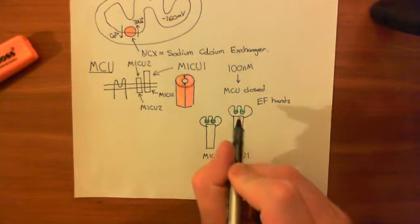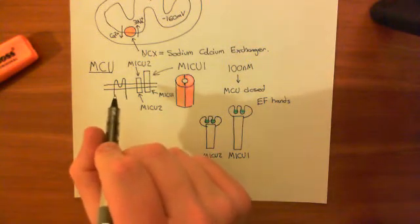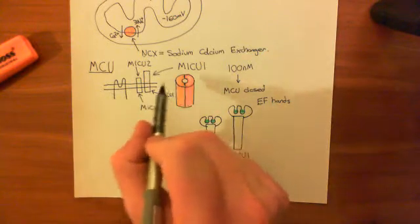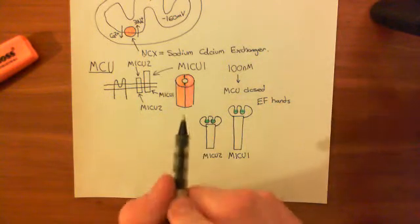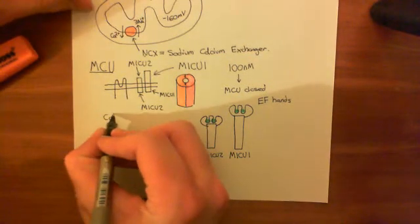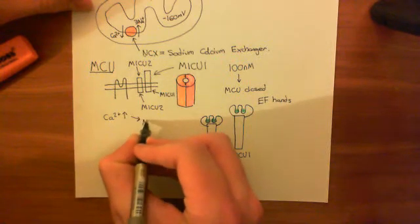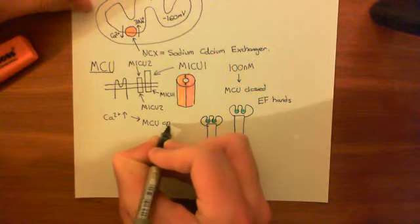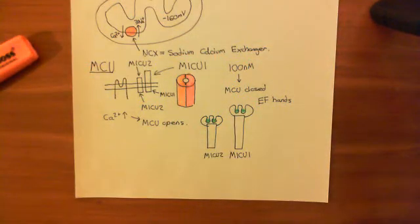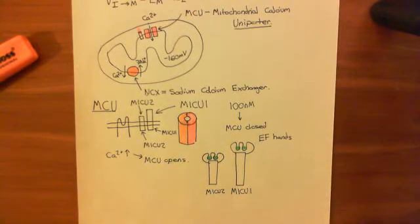Furthermore, when calcium binds to MICU1, MICU1 actually activates MCU to adopt the open conformation. So you've got a double whammy, basically, leading to this channel opening. So when calcium in the cytoplasm goes up, MCU opens. So the mitochondrial calcium uniporter opens. And what does that cause? That causes calcium in this matrix to go up in response to an increase in cytosolic calcium.